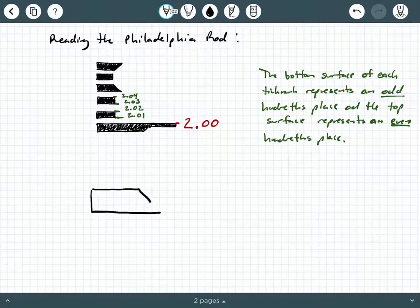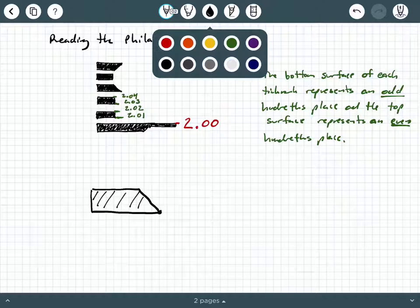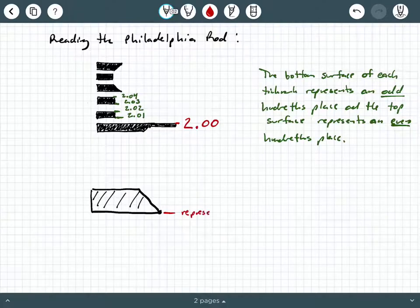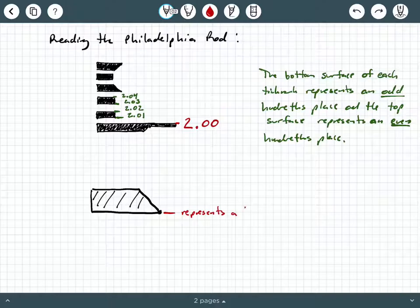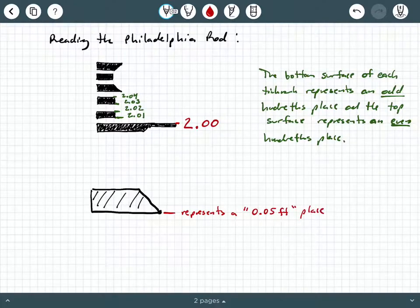So when you see the trapezoidal shape that has got the tip at the bottom, the bottom surface of this represents a 0.05 foot place. So that's kind of like a halfway mark when it comes to hundredths.